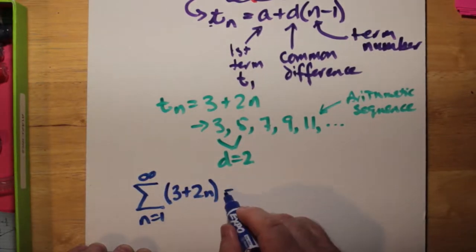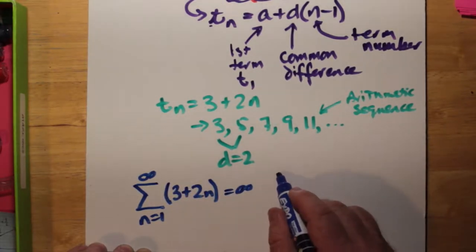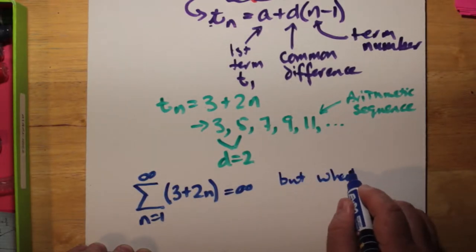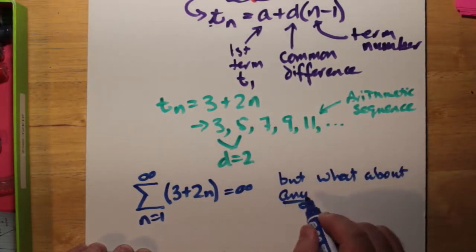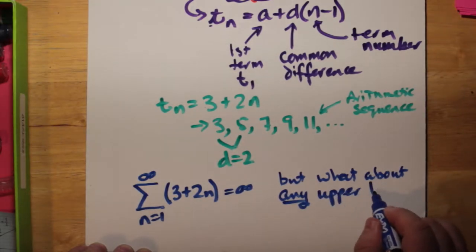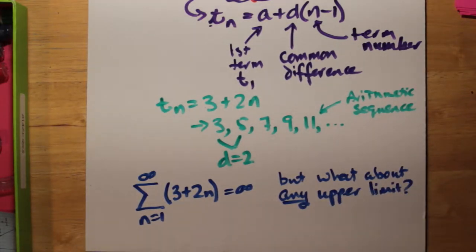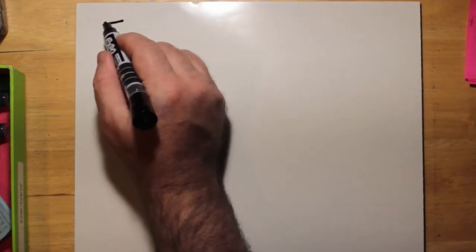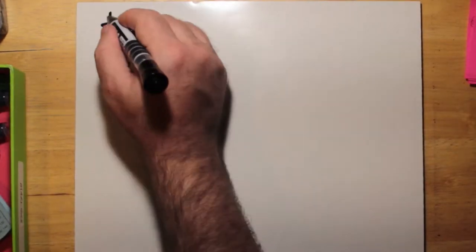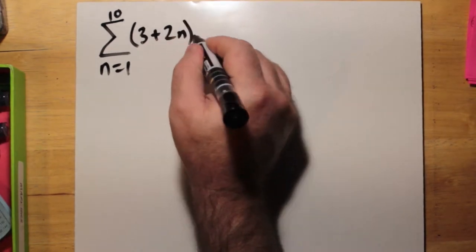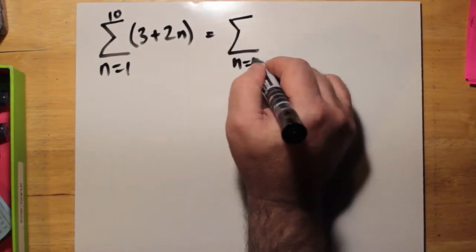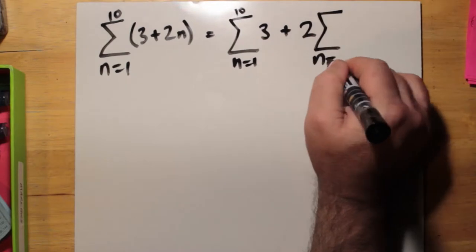And here we go, just adding up these terms. Now if we add them up to infinity, chances are with an arithmetic sequence we're going to get infinity. But what about if the upper limit is finite, any finite number? Well, we'll use the same formula again, 3 plus 2n. We'll go up to 10 from 1 to 10. And we can say the sum from n equals 1 to 10 of 3, and the sum from n equals 1 to 10 of 2n.